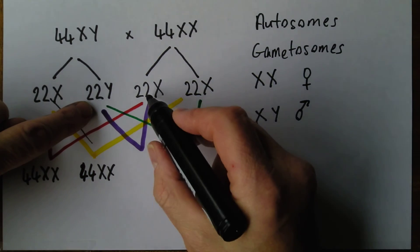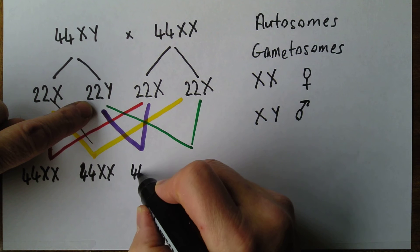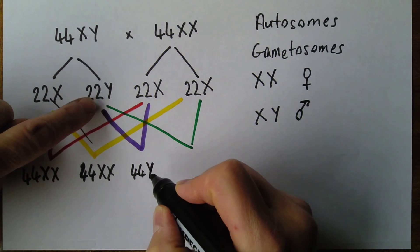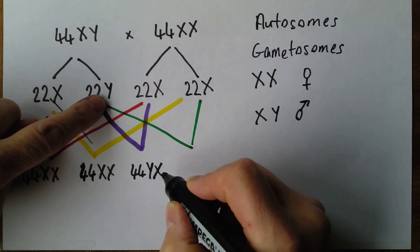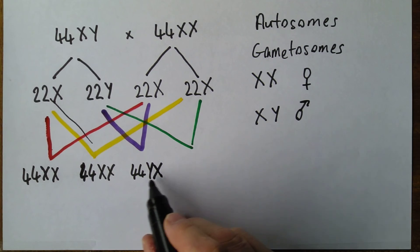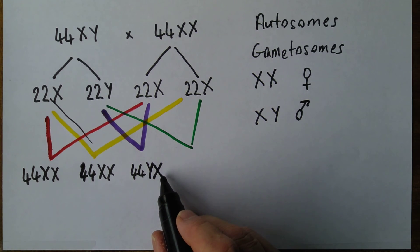Now that one and that one again is 44. But this time we've got a Y from the father's sperm and an X from there. So that's 44YX or XY, which is a boy.